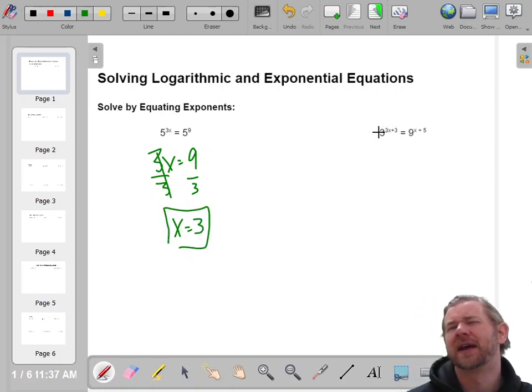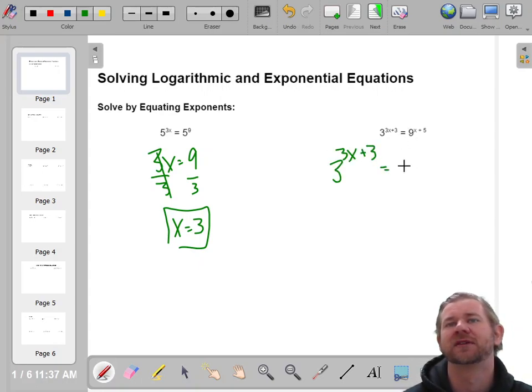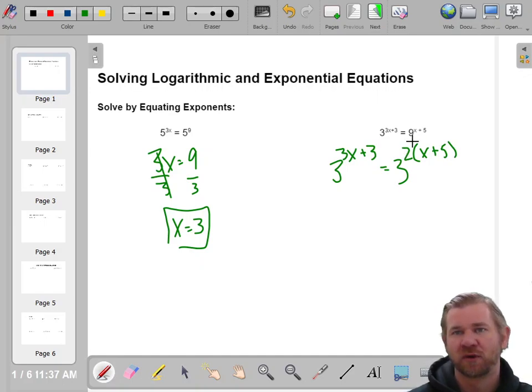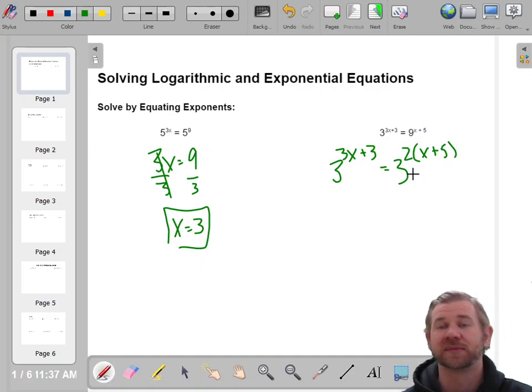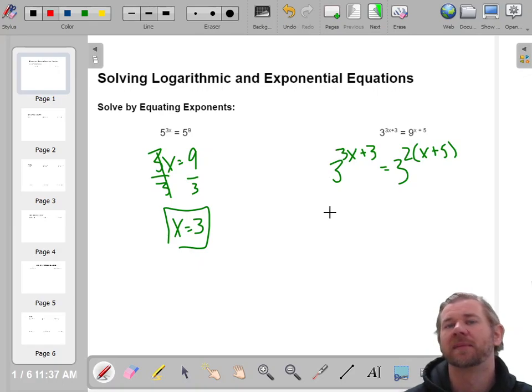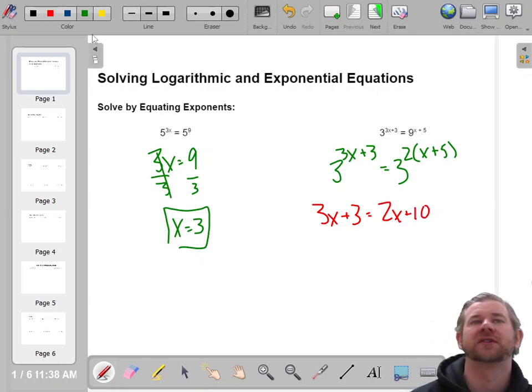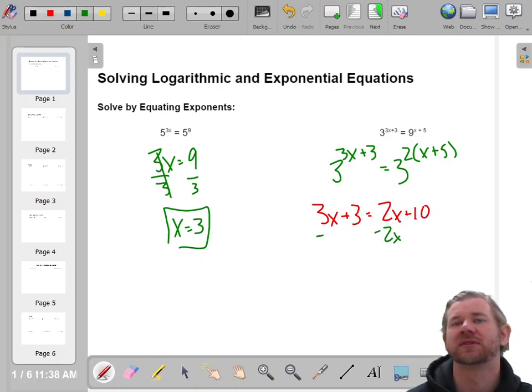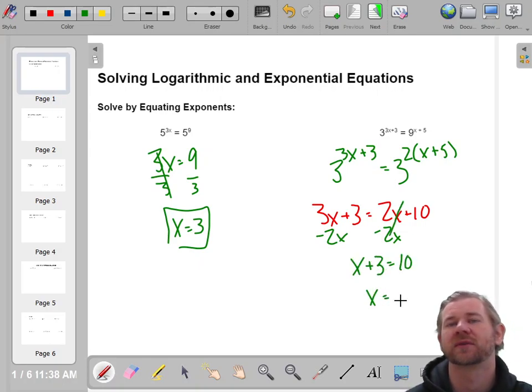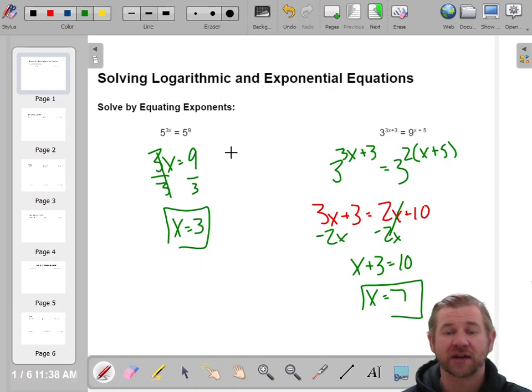Now, the second one, you're like, well, 3 and 9 aren't the same, so what do you mean? Well, they're not, but 3 and 9 do share a base. They're both base 3. 9 is 3 squared. Now, you do need to be careful. If you rewrite this, exponents rules will tell you you would have to multiply those exponents together, so we're going to have to distribute. I'm going to say 3x plus 3 equals 2x plus 10. Collect all your x's on one side, so if you subtract 2x on both sides, now you have x plus 3 equals 10. And if you subtract 3 on both sides, you get x equals 7.